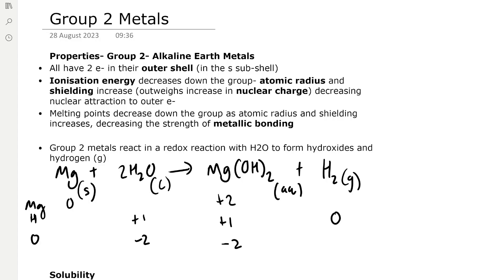Melting points decrease down the group because atomic radius and shielding increases, which decreases the strength of metallic bonding between the metal ions. So less energy is required to overcome the metallic bonding.